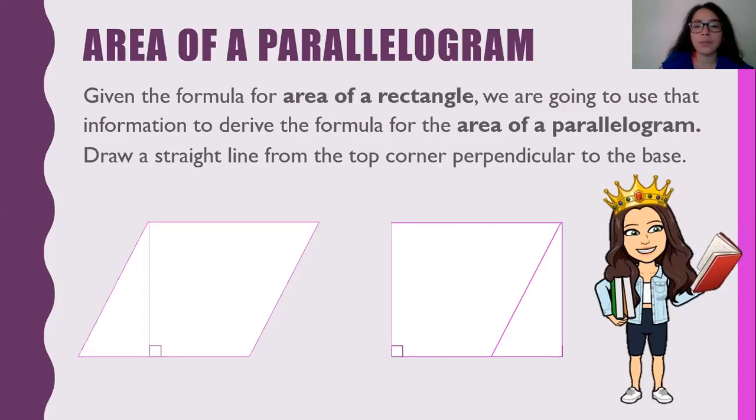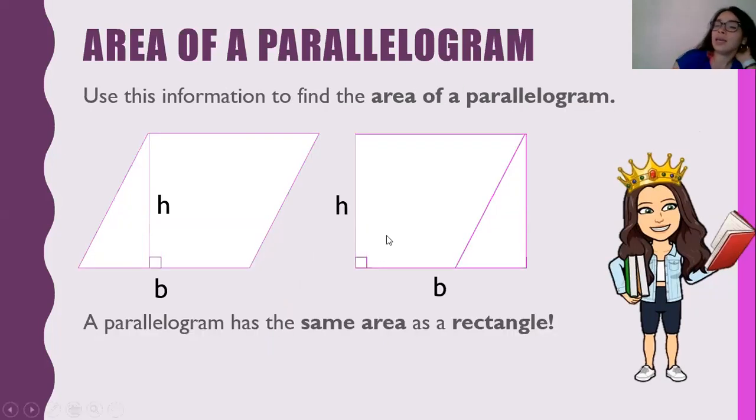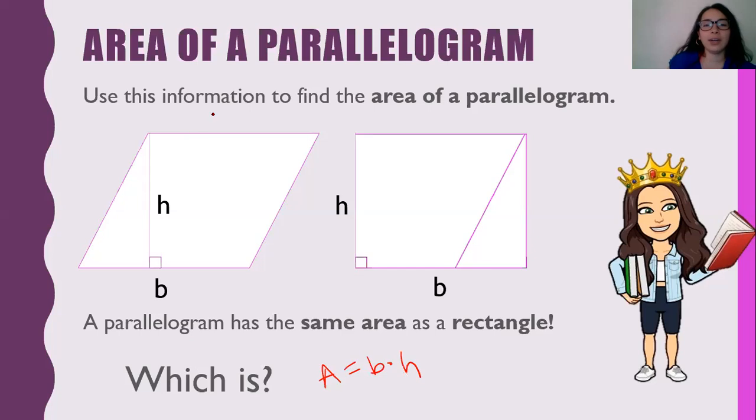It becomes a rectangle, right? That's a parallelogram. It becomes a rectangle. So when we're finding the area of a parallelogram, we have to take into consideration height and base. A parallelogram has the same area as a rectangle. What is the area of a rectangle? Do you guys remember? Base times height. So we go here, area is equal to base times height. So guess what? The area of a parallelogram is the same thing. It is also just area is equal to base times height.